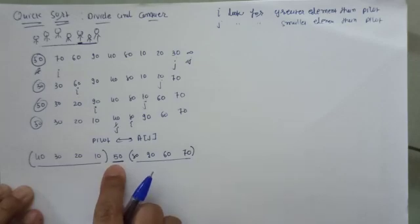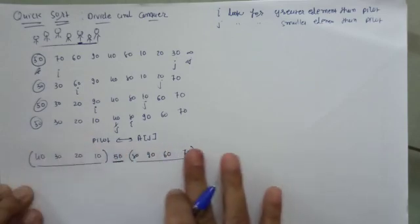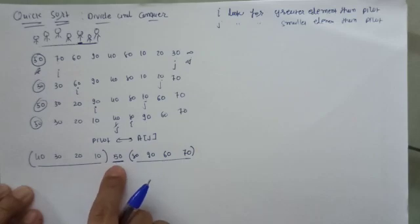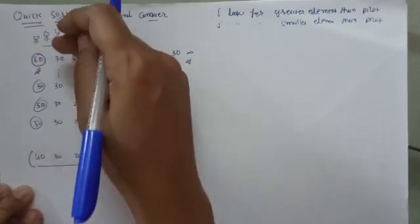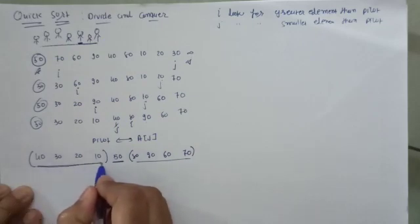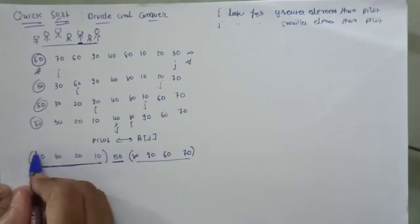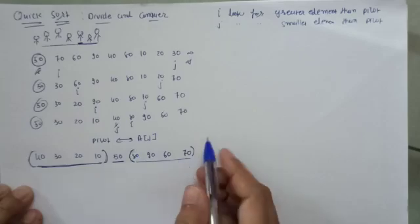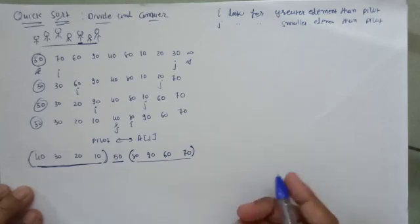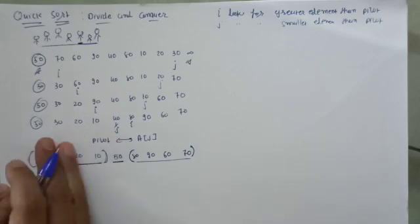After completion of the whole sort, whatever place 50 occupies after one pass is its correct final position. This is the partitioning procedure. Now we will recursively call this partitioning procedure on each sub-array — this is the divide and conquer approach.